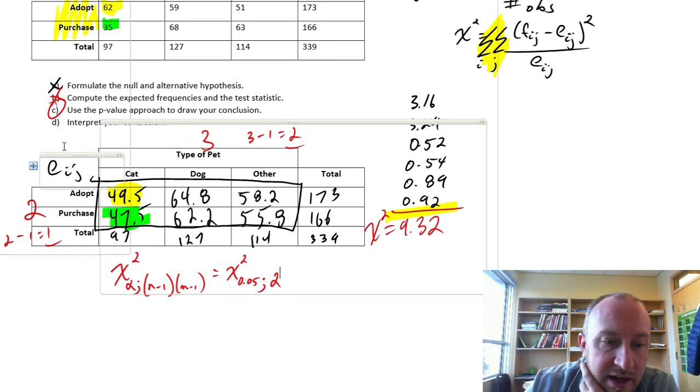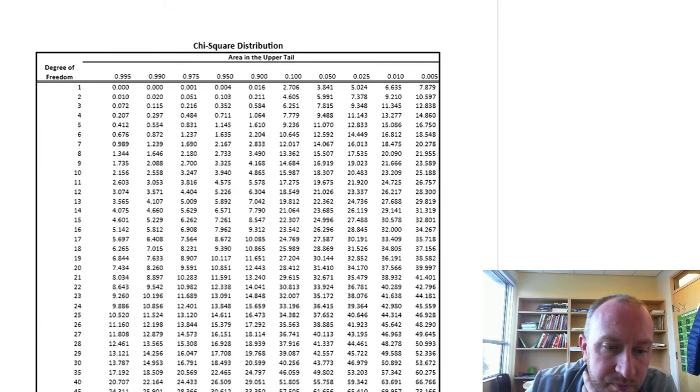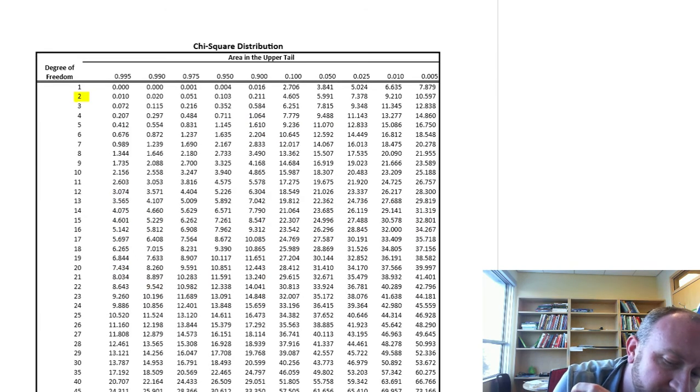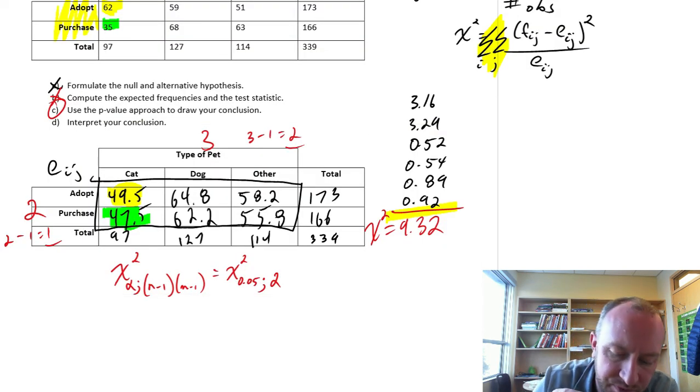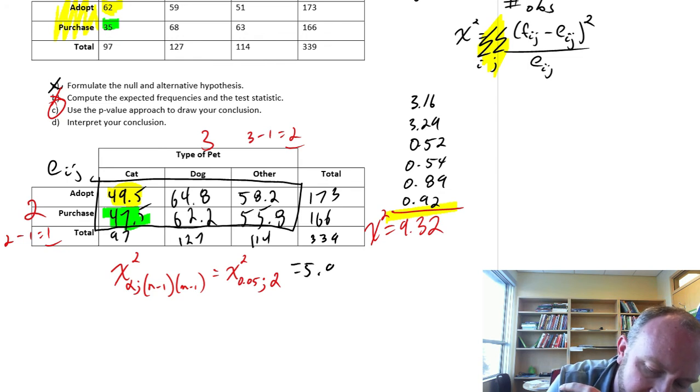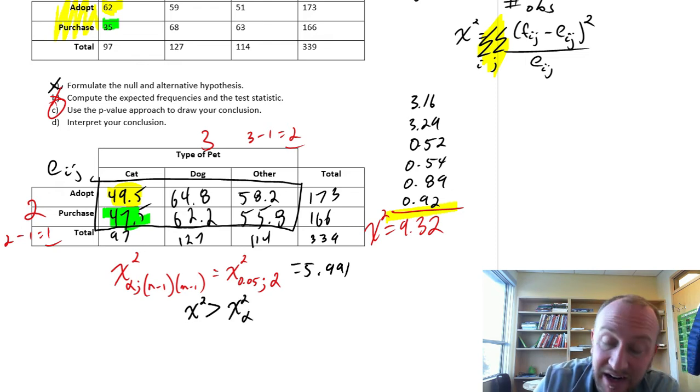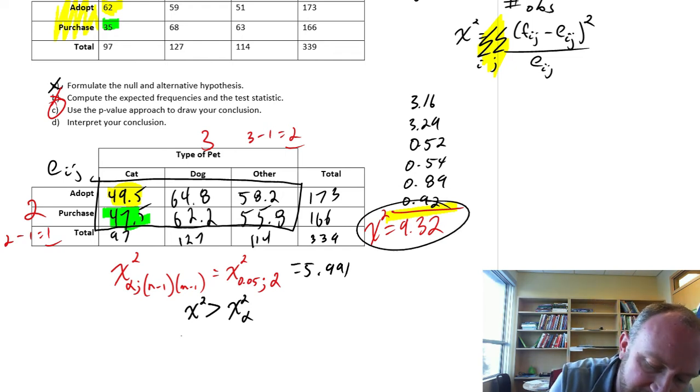So if we go to our chi-squared tables, 2 degrees of freedom, alpha is 0.05. There's our critical value, 5.991. And we reject if our test statistic is greater than that critical value, which for us, it is. 9.32 is greater than 5.991. So based on the critical value approach, we can reject.